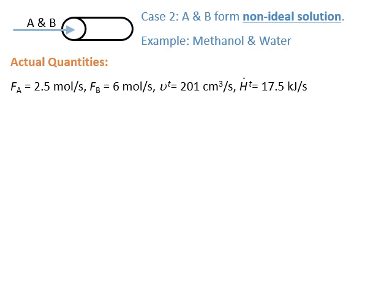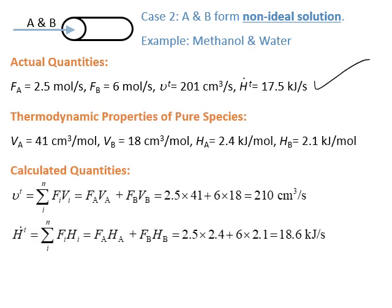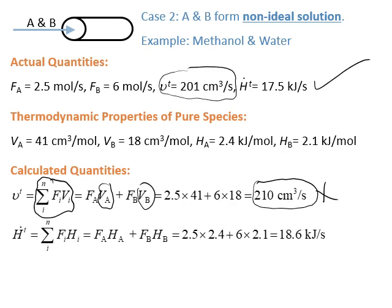Now let's take another case where A and B form a non-ideal solution. An example would be methanol and water. Again, we have the actual quantities and we go to thermodynamics to get the properties for A and B. When we calculate the volumetric flow rate by summing up the volumes of the pure constituents, we get a value of 210 cubic centimeters, which is different from the actual value.